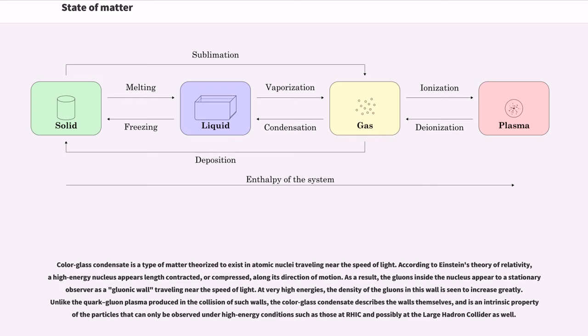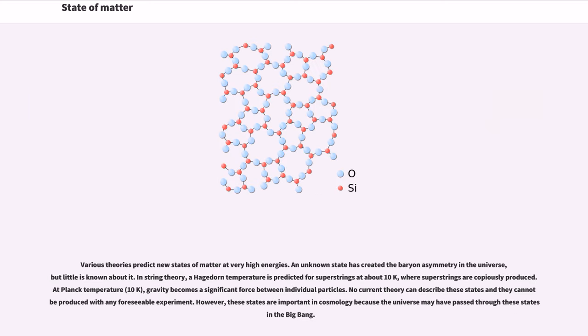Various theories predict new states of matter at very high energies. An unknown state has created the baryon asymmetry in the universe, but little is known about it. In string theory, a Hagedorn temperature is predicted for superstrings at about 10³⁰ K, where superstrings are copiously produced. At Planck temperature, 10³² K, gravity becomes a significant force between individual particles. No current theory can describe these states and they cannot be produced with any foreseeable experiment. However, these states are important in cosmology because the universe may have passed through these states in the Big Bang.